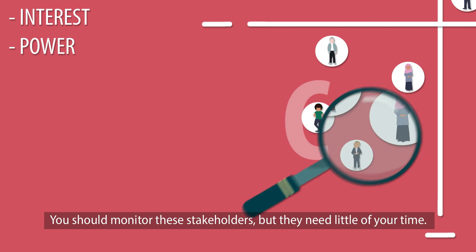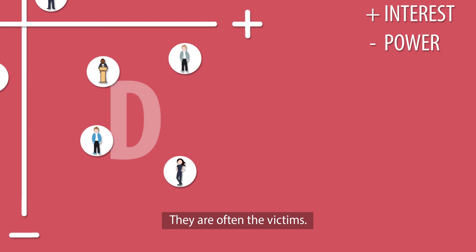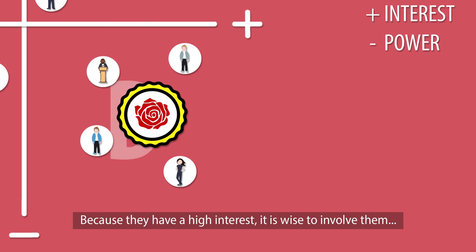Quadrant D contains the stakeholders with high interest and little influence. They are often the victims. Because they have a high interest, it is wise to involve them and, if they support you, try and empower them to gain influence.